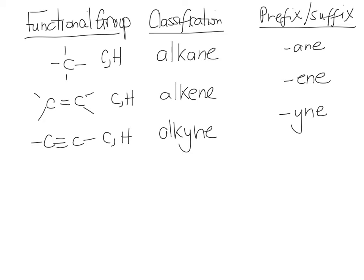Now, if you are a carbon and you are bonded to an atom X, where X is a halogen, so chlorine, fluorine, bromine, iodine, then you are a halo alkane.